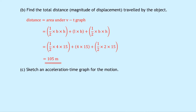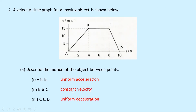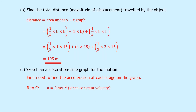Part C says to sketch an acceleration time graph for the motion. To sketch an acceleration time graph, we first need to find the acceleration at each stage. We use the acceleration equation a equals v minus u over t. Looking at B to C first — that was a constant velocity, so if an object is travelling with a constant velocity it cannot be accelerating. So the acceleration for B to C must be 0 metres per second squared.